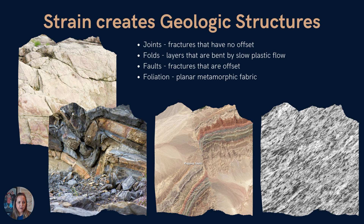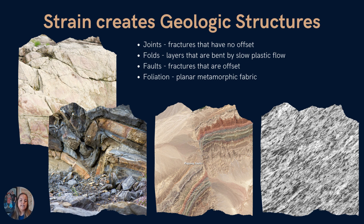Here are some of the things created from those stresses. We might see joints, folds, faults, or foliation. Joints are just fractures or cracks in a rock that don't necessarily have any particular offset, whereas faults are fractures with a particular offset — that middle photo shows colored layers being offset by a fault. Folds, seen in the bottom left picture, show layers that are no longer horizontal but have been bent. Foliation is a type of metamorphic fabric where minerals are aligning themselves perpendicular to each other from compressive stress — we'll talk more about that when we cover metamorphism.